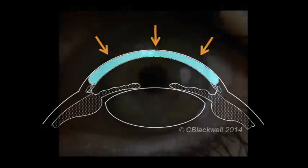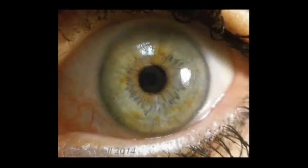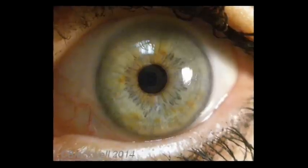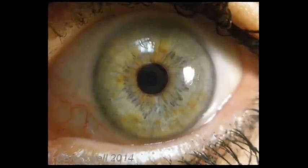But first, this is a good place to appreciate the remarkable clarity of the cornea. Over 95% of the light hitting the cornea is transmitted through, which is why the only way you see the cornea is by the reflections from the surface.